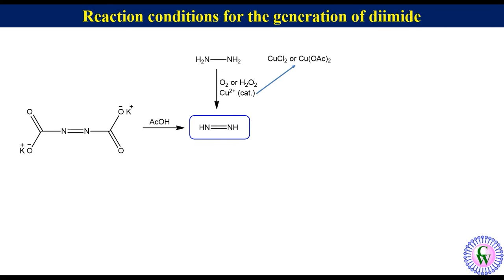Reaction conditions for the generation of diimide. There are a variety of reaction conditions to generate diimide intermediate. It can be generated by the oxidation of hydrazine with O2 or H2O2 in the presence of copper-2 catalyst. Copper-2 chloride or copper diacetate can be used as a source for copper-2. Decarboxylation of dipotassium azodicarboxylate in the presence of acetic acid also generates diimide intermediate. It can also be generated by thermal decomposition of para-toluene sulfonyl hydrazide.